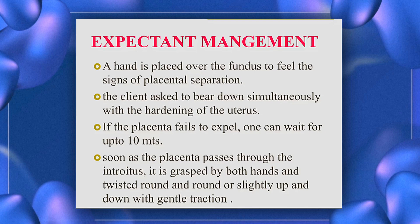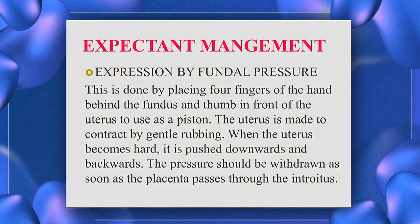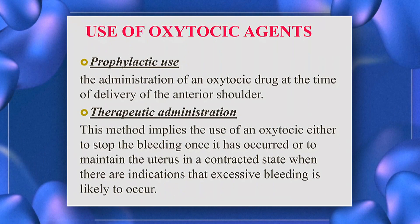This is called application of controlled contraction. Next is expression by fundal pressure: four fingers are placed behind the fundus and the thumb in front of the uterus to use as a piston. The uterus is made to contract by gentle rubbing. When the uterus becomes hard, it is pushed downward and backward, and pressure is withdrawn as soon as the placenta passes through the introitus.